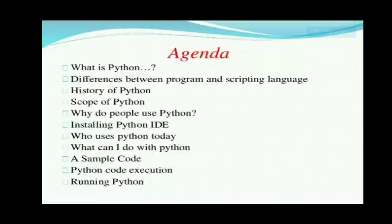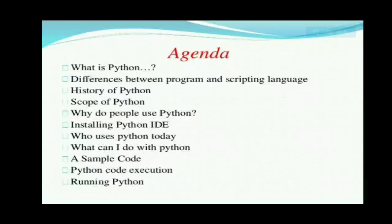In case of high level language there are also three types: one is a designing language, second is scripting, and third is a programming language. Python comes under programming language, and sometimes we can also call it a scripting language.